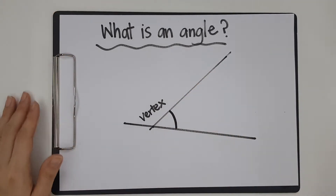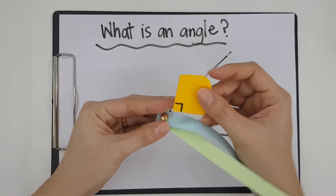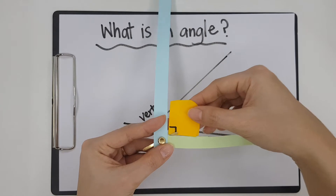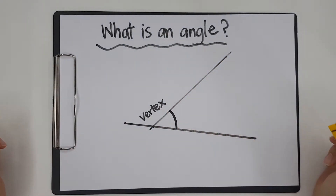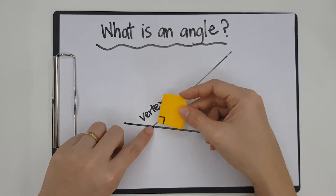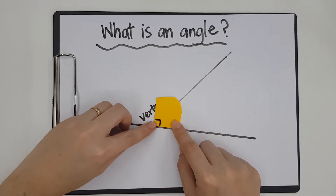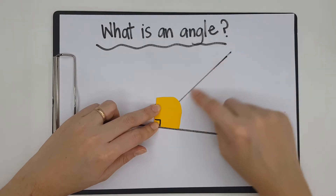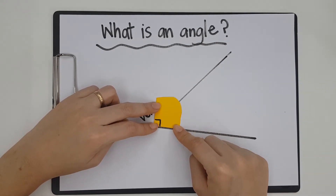We learned that a right angle looks like this. A right angle is when we turn — the size of the right angle is when you turn from here all the way there. So a right angle looks something like that. We are going to compare this angle with a right angle. I'm going to put the corner of the paper right angle on the vertex, align one of the lines with the edge of this right angle. As you can see, one part of this angle — this line — is blocked by the paper right angle.